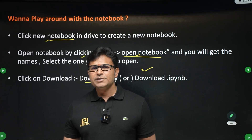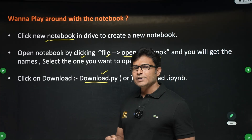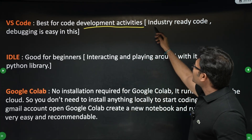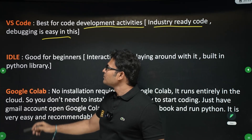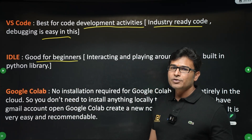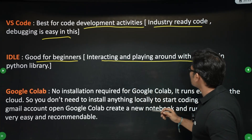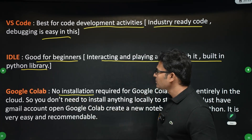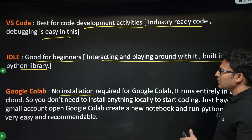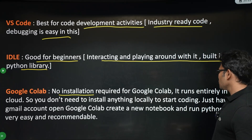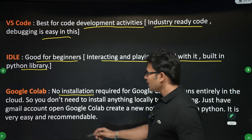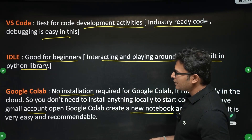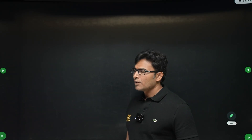Everything will be very simple. VS Code is best for code development activities — basically industry-ready code — and debugging is easy in VS Code. IDLE is good for beginners, but we are not going to use it. For interacting and playing around with the built-in Python library, you can use it. Google Colab has no need to install anything — it runs entirely in the cloud. You just need a Gmail account, open Google Colab, create a new notebook, and run Python. It is very easy and recommendable. So we are going to use Google Colab.